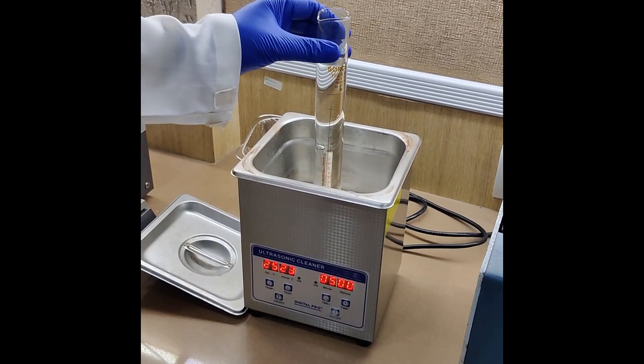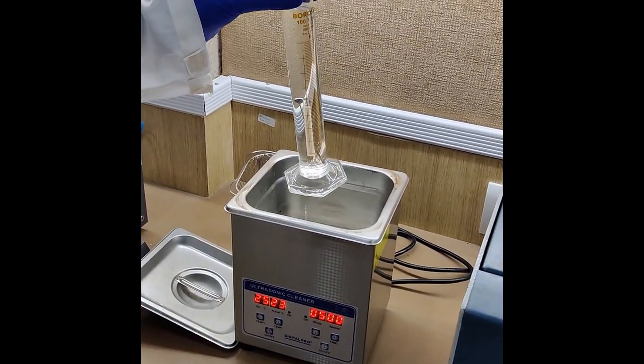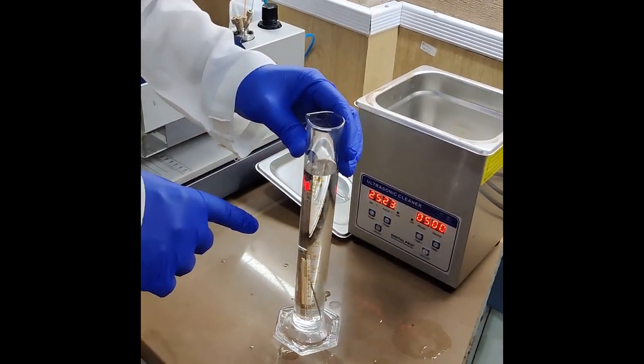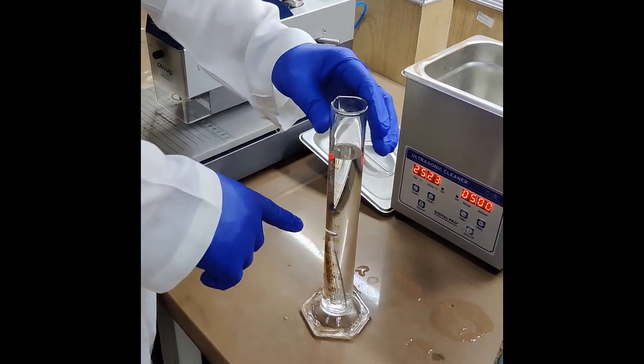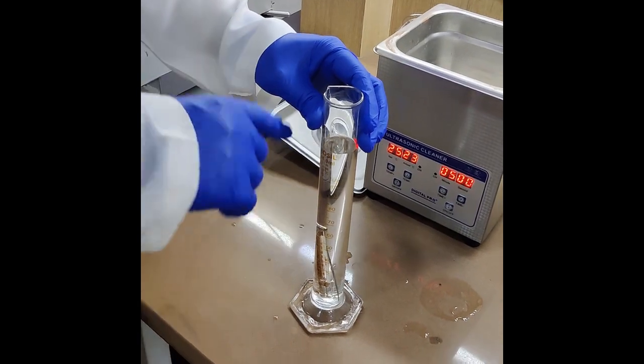Once the sonication is done, remove the measuring cylinder along with the syringe outside and remove the syringe from the measuring cylinder along with the piston.